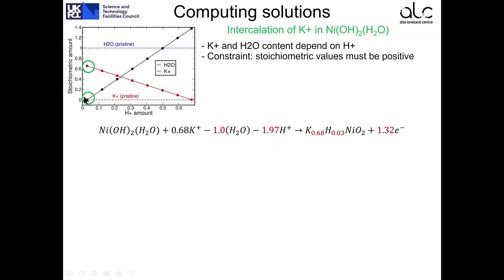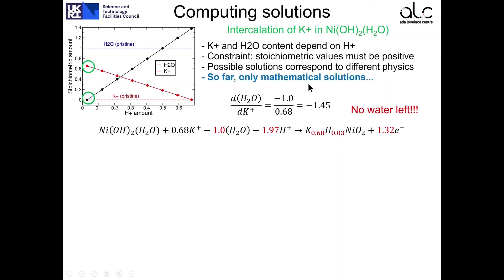So this solution at the other extreme has very little protons, the maximum amount of potassium at 0.68, but we have no water left. Again, when we consider the water and the potassium that participated in the reaction and we take the ratio, we find minus 1.45. So this means that 100 intercalated potassium removed 145 water molecules. So what we learned is that different solutions correspond to different physics. So far, we have only discussed about mathematical solutions.